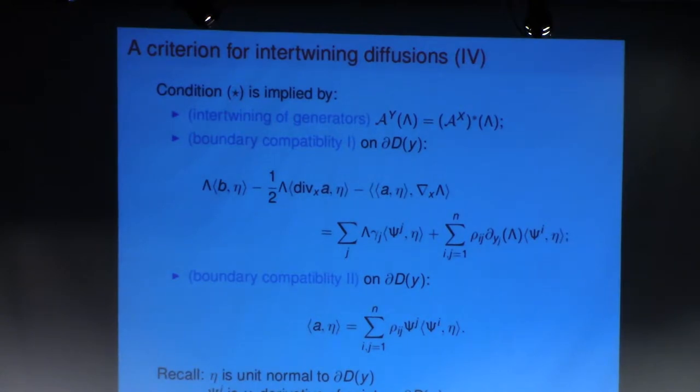Then there are two conditions which are related to the fact that Z is a process with reflection. And so, in particular, it's reflection off a domain which depends on the top level. So this corresponds to the fact that in the Gelfand-Tsetlin polytope, if I fix the top level, the domain of the lower levels actually changes.